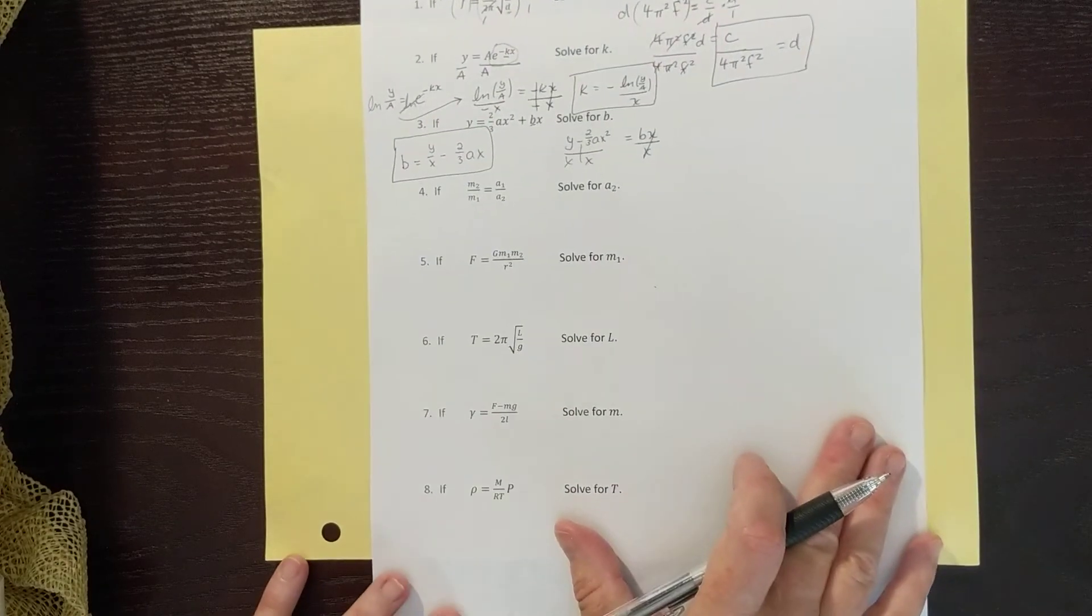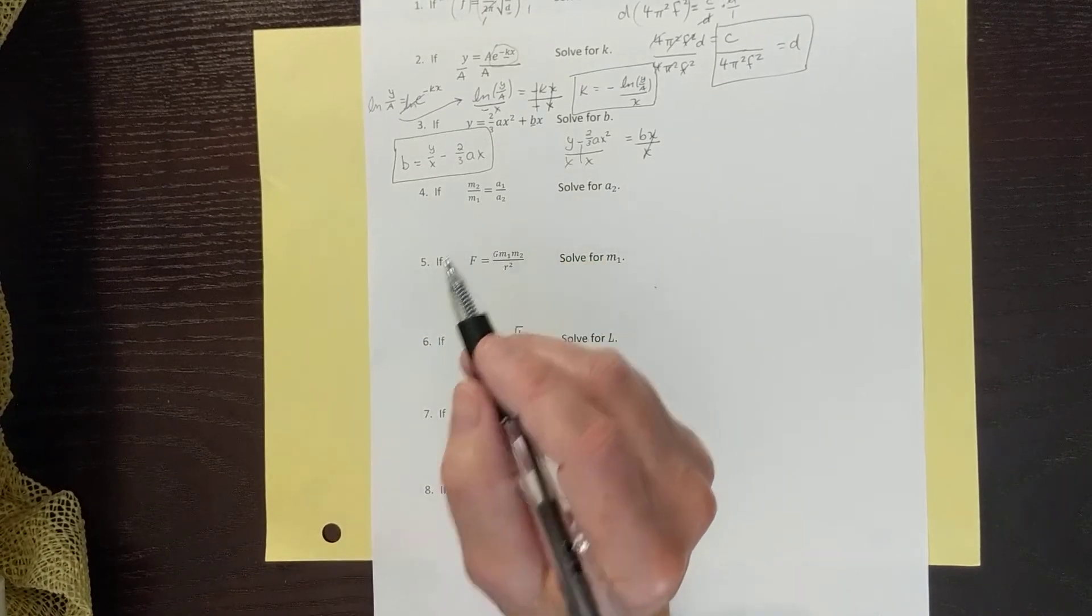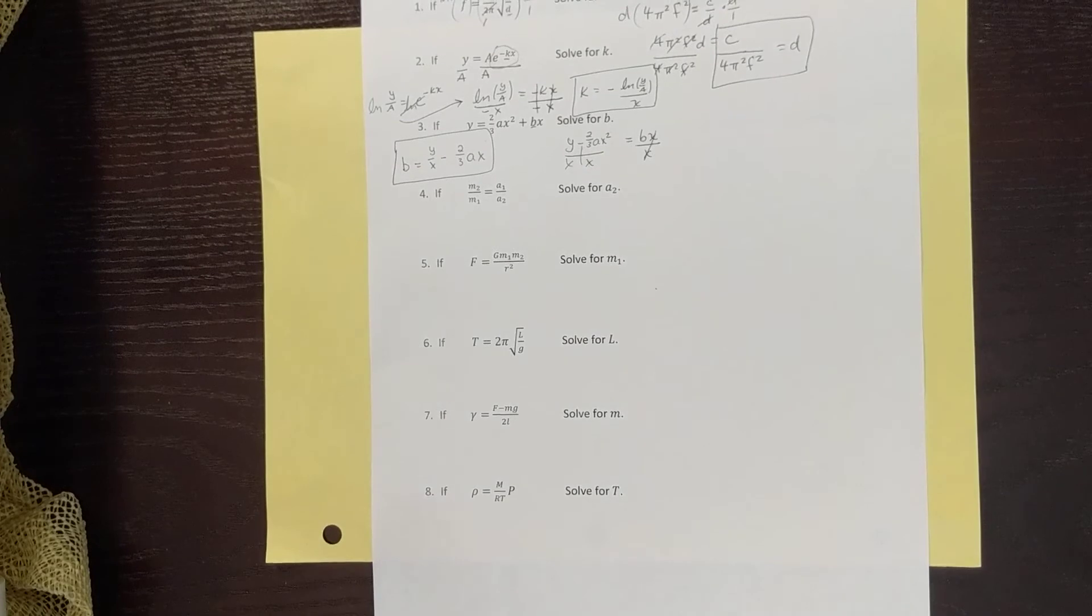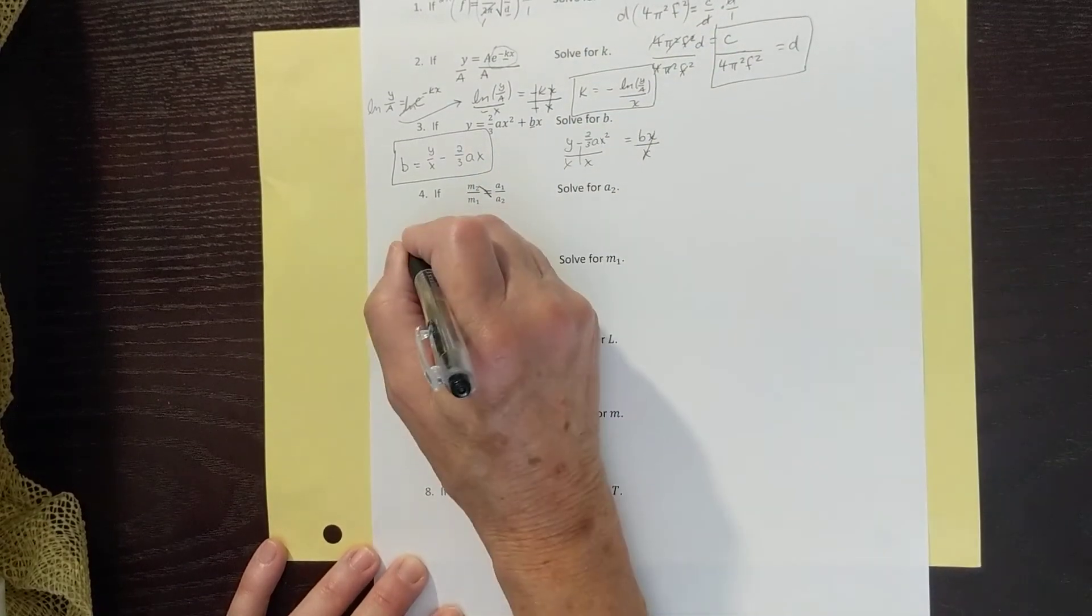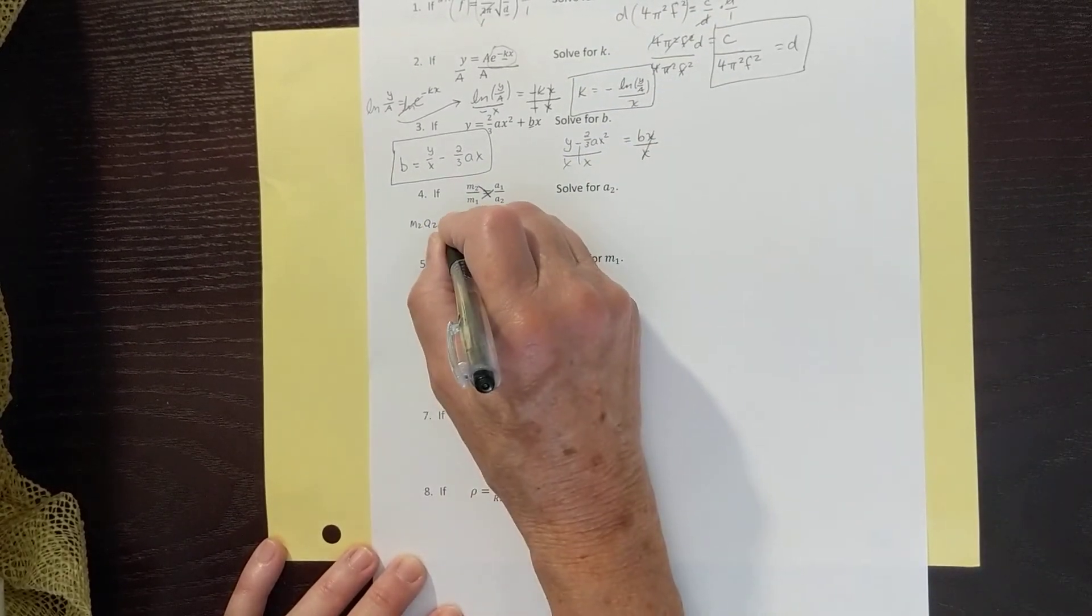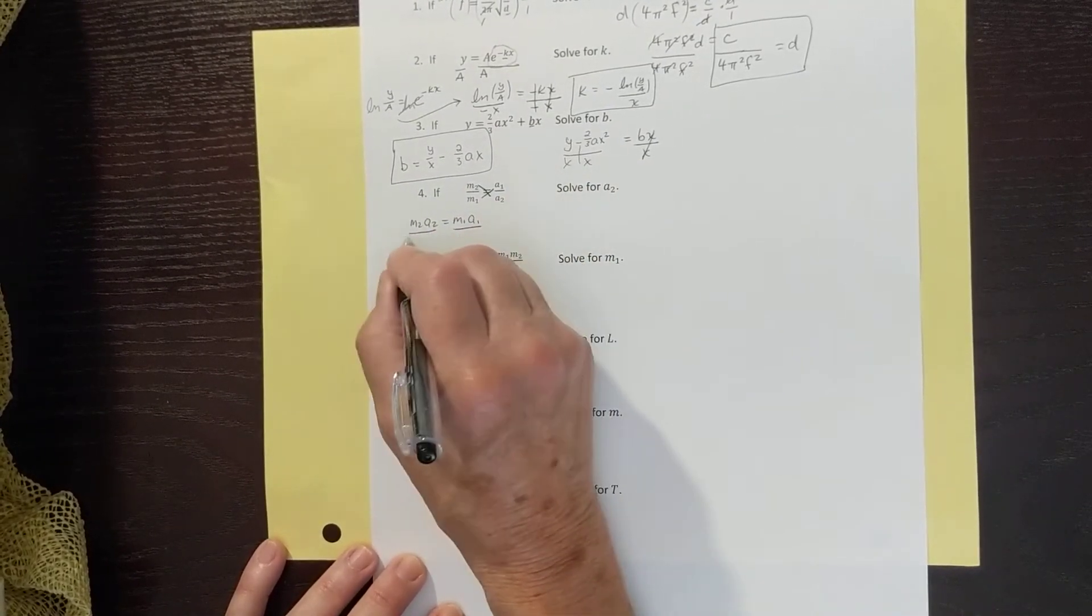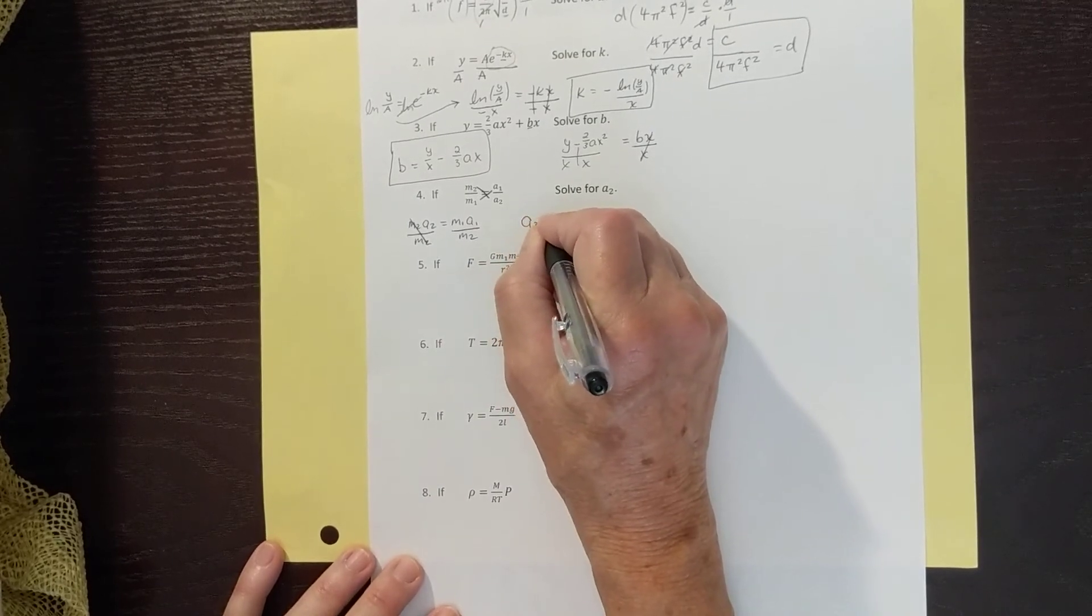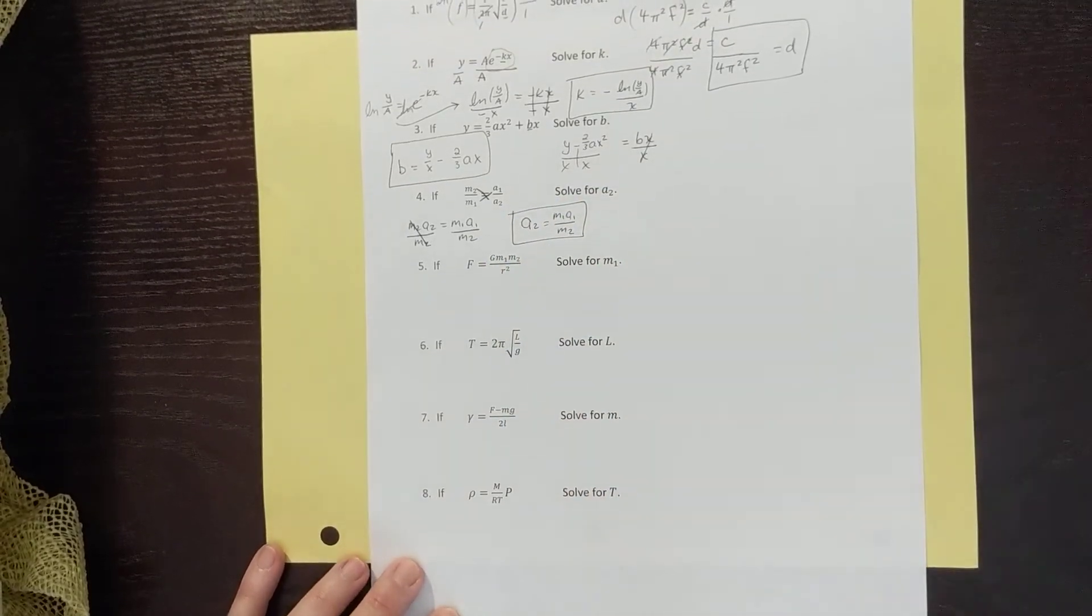Okay, last example here. If we have m2 over m1 is equal to a1 over a2, this is an equation you'll see when you have equal forces. What we can do whenever you have a fraction equals a fraction, you can cross multiply. So I can say this numerator times this denominator, m2 a2 is equal to this numerator times this denominator, m1 a1. And then if I want to solve for a2, I simply divide off by what it's being multiplied by or apply its inverse. So you get that a2 is equal to m1 a1 divided by m2. All right, that's four little examples.